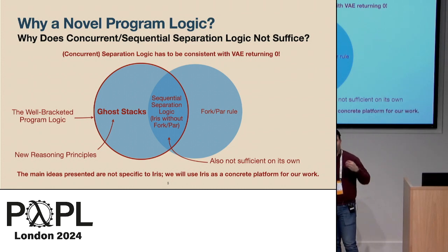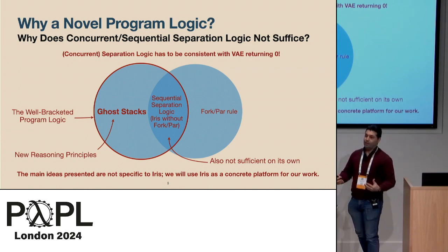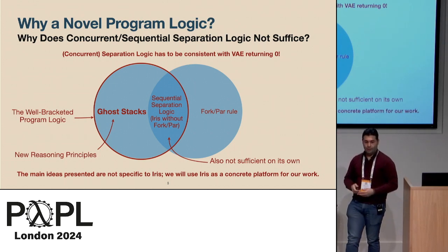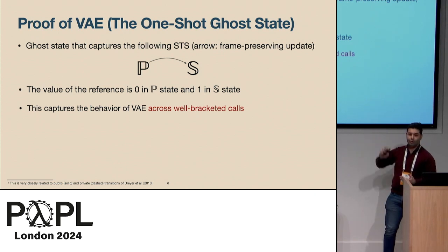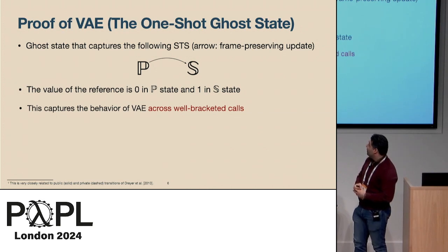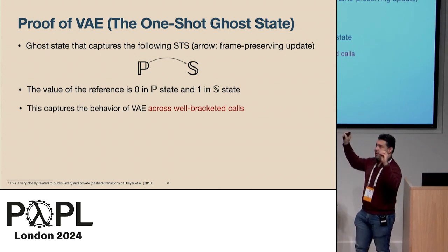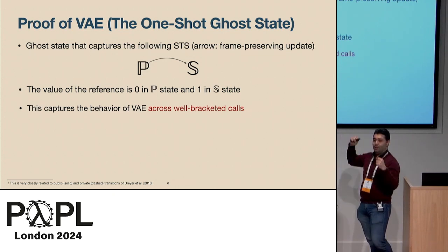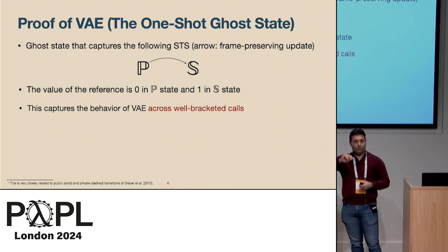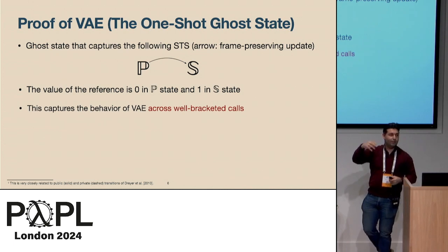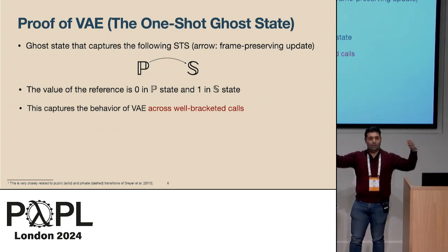I think about this similarly to invariants in separation logic — just as invariants strengthen separation logic to allow reasoning about concurrent programs, ghost stacks strengthen sequential separation logic to allow you to prove more things. Let me explain ghost stacks by going through the proof. For this proof, we use a simple two-state ghost resource. It has two states: pending, written P, and shot, written S. The only allowed transition is from pending to shot. Pending represents the state where the reference is 0, and shot represents when the reference is 1.